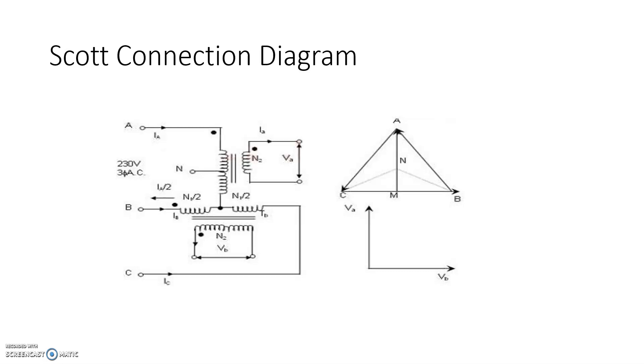The Scott connection evenly distributes a balanced load between the phases of the transformer. The Scott T transformer requires three-phase power input and provides equal single-phase outputs called main and teaser transformers. An external jumper is also required to connect the primary side, the main and the teaser sections. The schematic diagram is as shown.